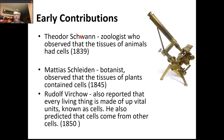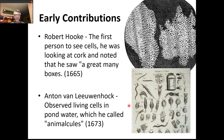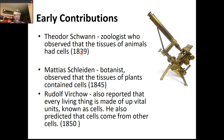Our next contributor is Theodore Schwann. He was a zoologist in 1839 and he realized that the tissues of animals are made of cells. When van Leeuwenhoek was making his observation, he was looking at single-celled organisms swimming around in pond water. It was another leap about 150 years later before anyone realized that organs and tissues of animals were made up of cells just like those single-celled organisms.